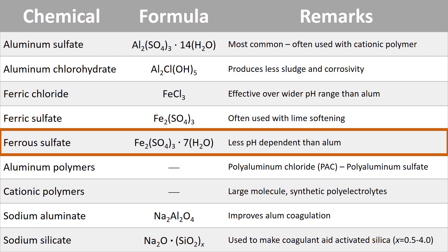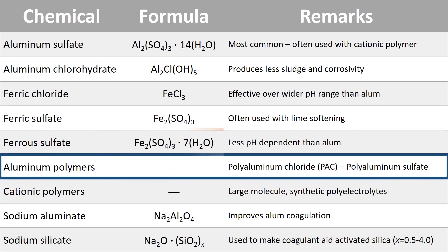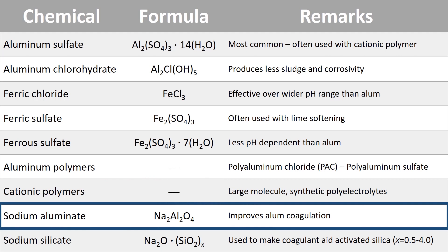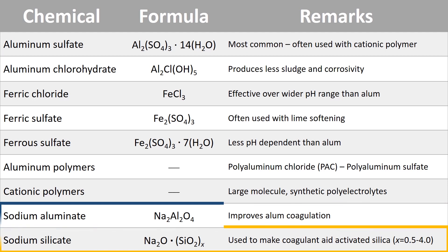There are also some aluminum polymers. One particular aluminum polymer is called polyaluminum chloride, or PAC, and another is polyaluminum sulfate. Next on the list are cationic polymers, which are large-molecule synthetic polyelectrolytes — man-made products, whereas aluminum sulfate and the ferric salts are naturally occurring. Sodium aluminate is often used along with alum because it improves the alum coagulation process. Finally, sodium silicate is used to make the coagulant aid activated silica, which is added in addition to a primary coagulant to enhance the coagulation process.